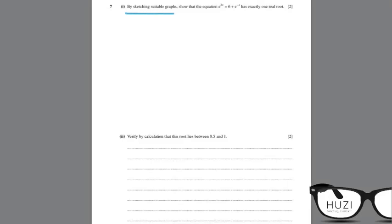Question number 7. By sketching suitable graphs, show that the equation e to power 2x equals to 6 plus e to power minus x has exactly one root. Okay.